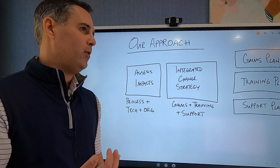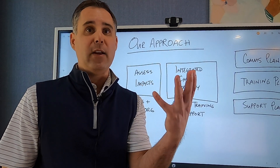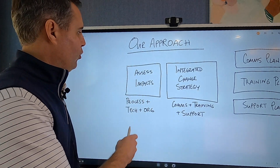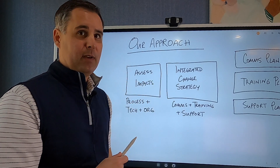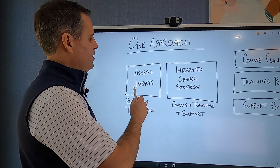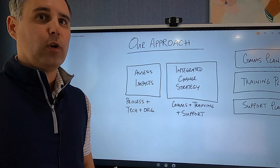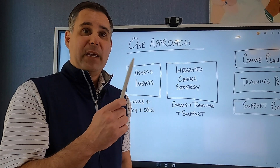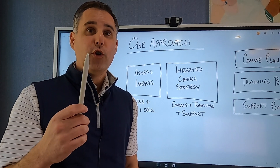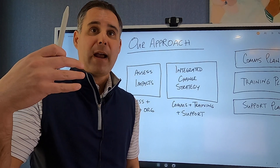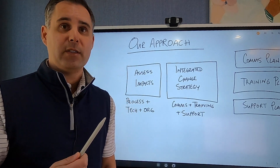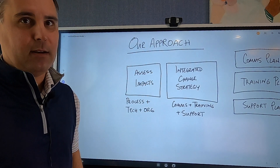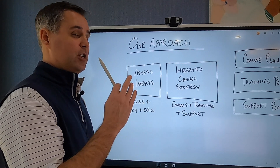For example, you might be doing a big system implementation that impacts your sales organization more than your finance organization. You'll end up with a deliverable — a heat map that assesses those impacts across people, processes, and technology. That becomes the single version of the truth from which you develop your strategy and plans. This is called a stakeholder impact assessment, and you've got to get that right.